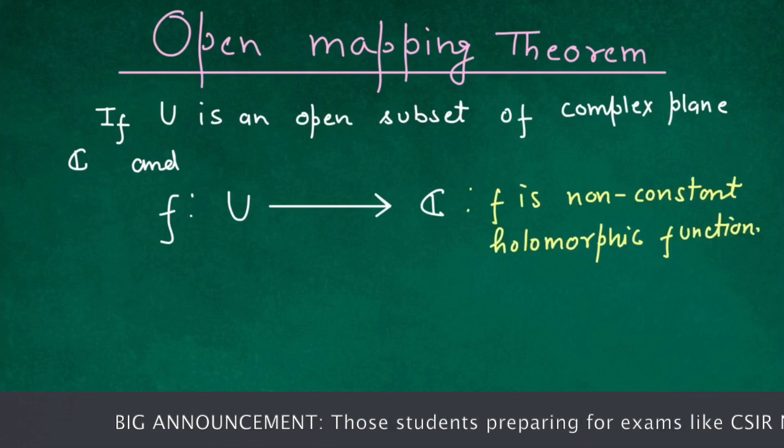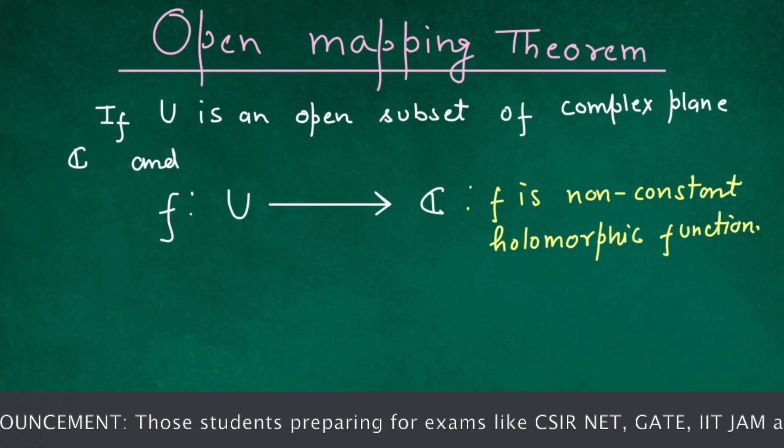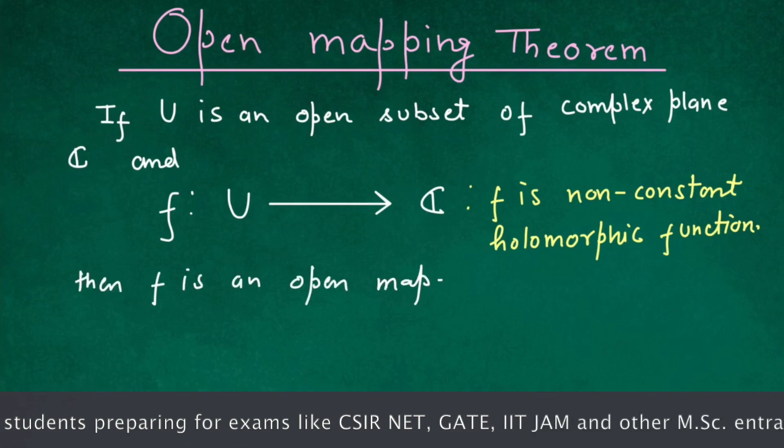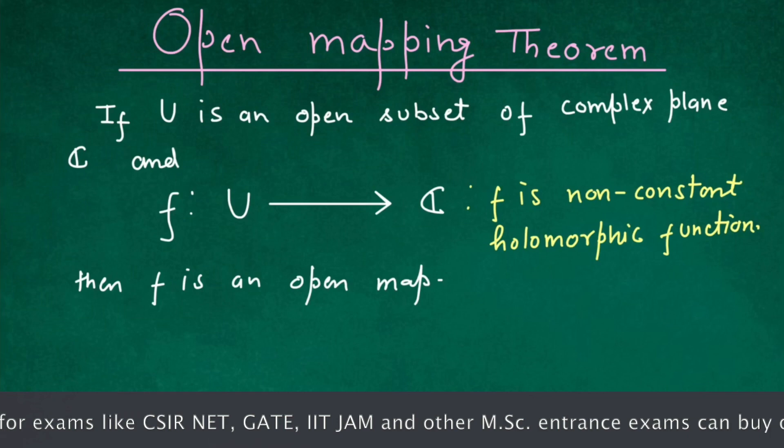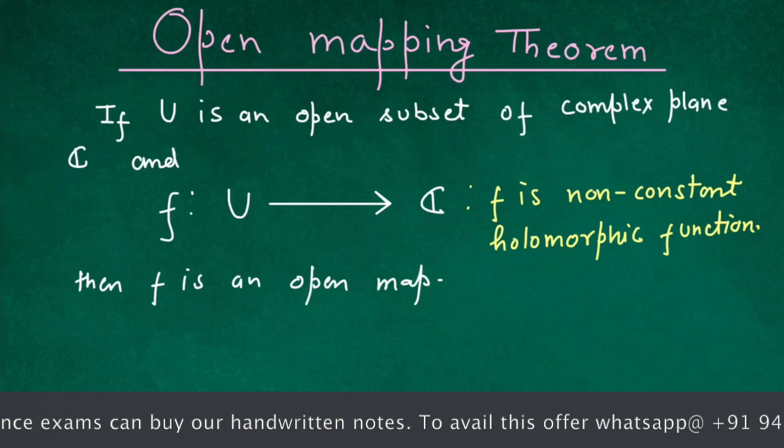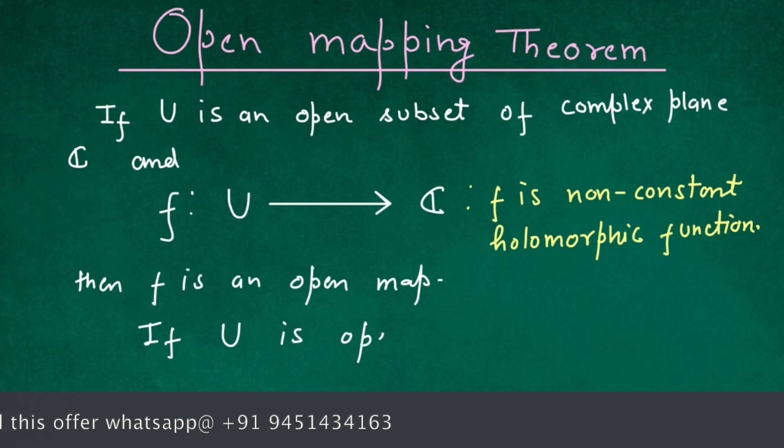Then f is an open map. Open map means that it sends open subsets of the complex plane to some open set. That is, if U is open then f of U is also open.